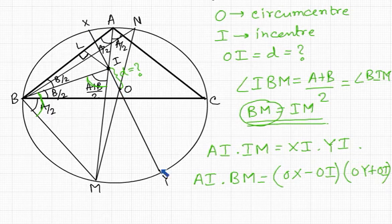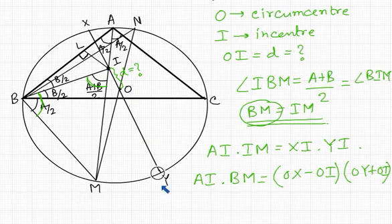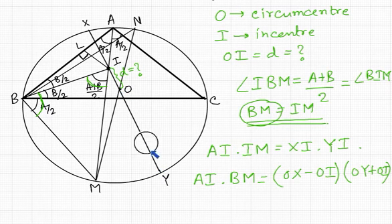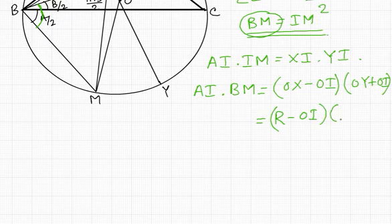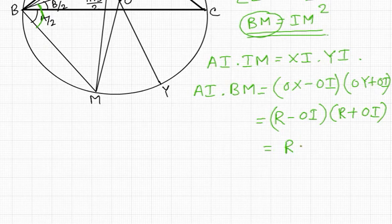XI is equal to OX minus OI, and YI is equal to OY plus OI, which is R + OI. Since O is the circumcenter, both OX and OY equal the circumradius R. So the right-hand side becomes (R − OI)(R + OI) = R² − OI².